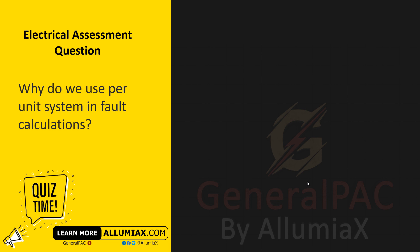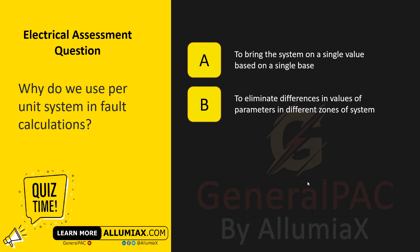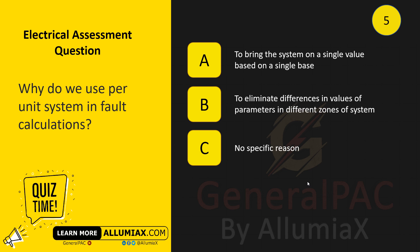Why do we use the per-unit system in fault calculations? A. To bring the system on a single value based on a single base. B. To eliminate differences in values of parameters in different zones of the system. C. No specific reason.